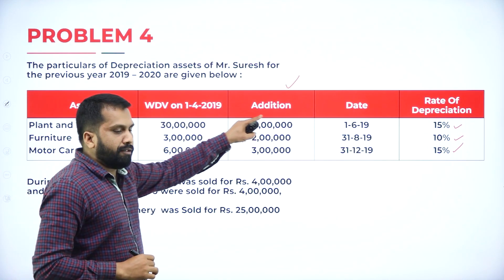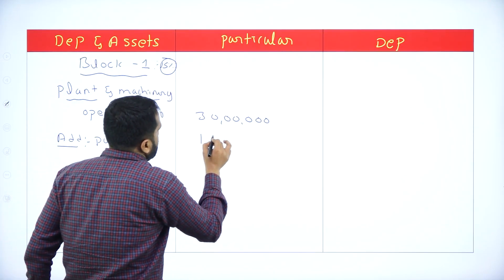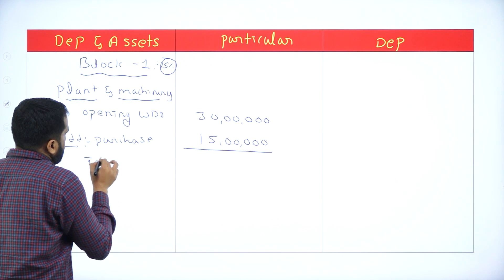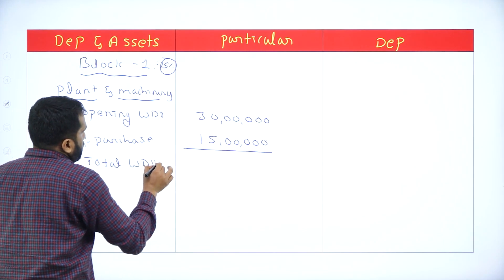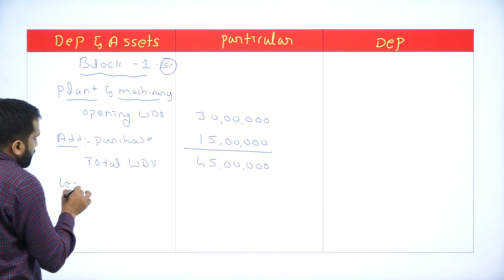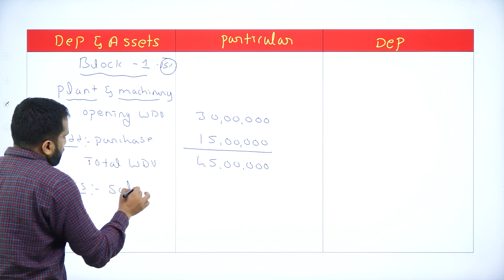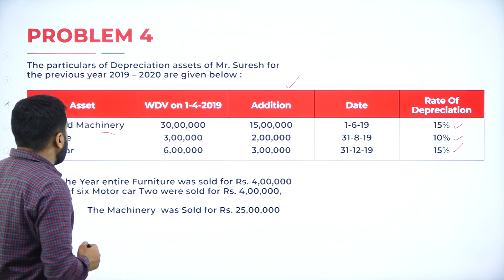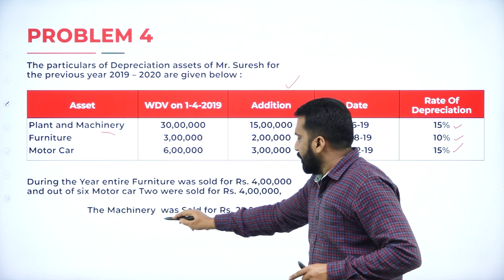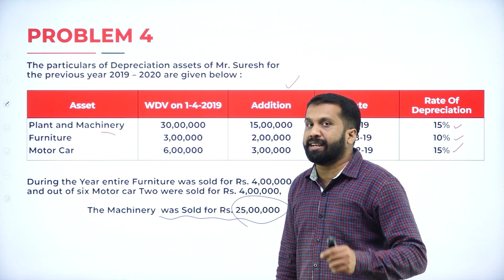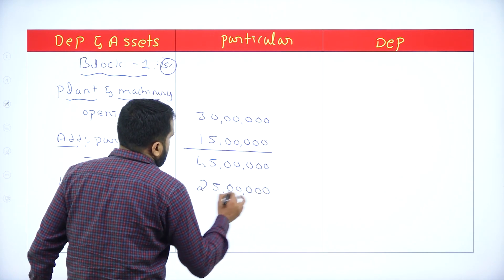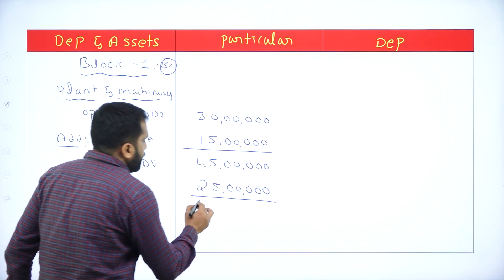Purchases are 15 lakh, making the total WDV 45 lakh. Less sales: machinery was sold for 25 lakh. So 45 minus 25 gives us 20 lakh as the closing WDV.